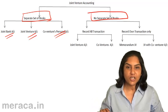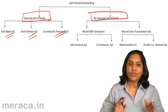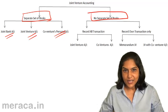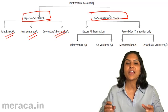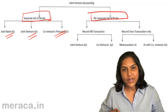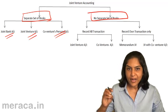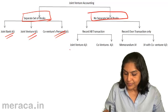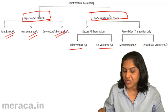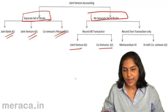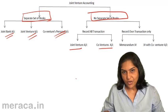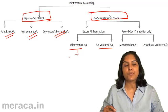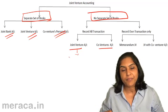But if a separate set of books is not kept for the joint venture, then each co-venturer has to record these transactions in his own books. When he does that — whether he incurs expenses, receives money, or the other co-venturer incurs expenses or receives money — all may be recorded in his own set of books. In that case, he prepares a joint venture account and the other co-venturer's account. The joint venture account will give us the profit or loss, and the co-venturer's account will indicate how much money is to be paid to or received from the co-venturer.